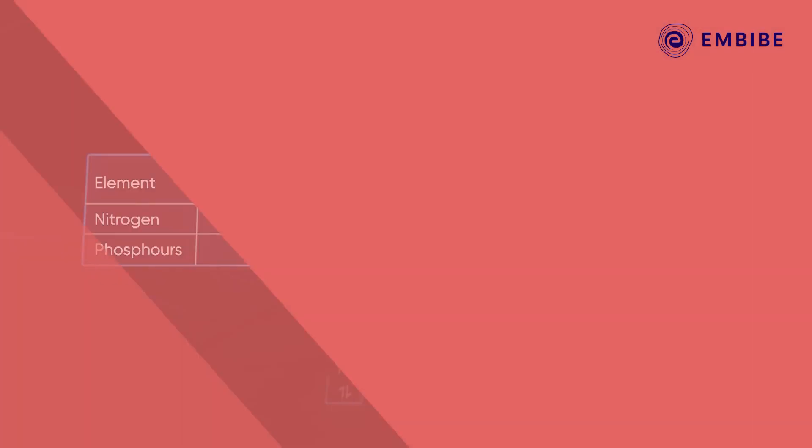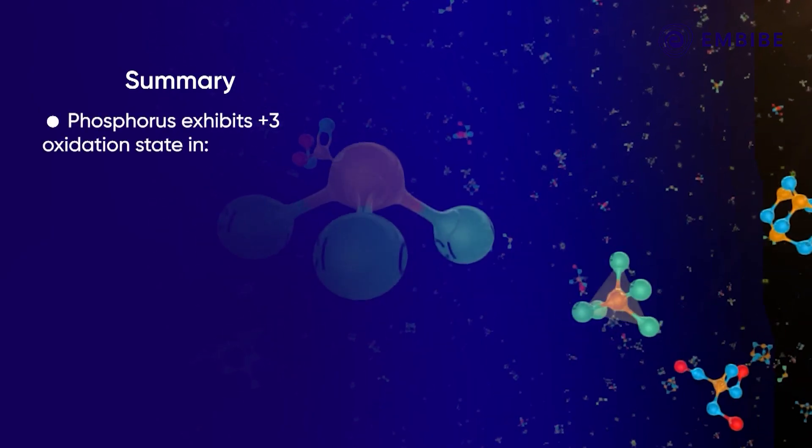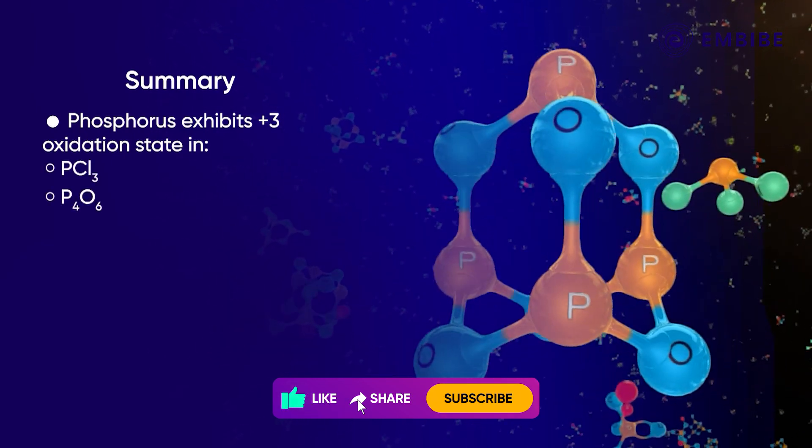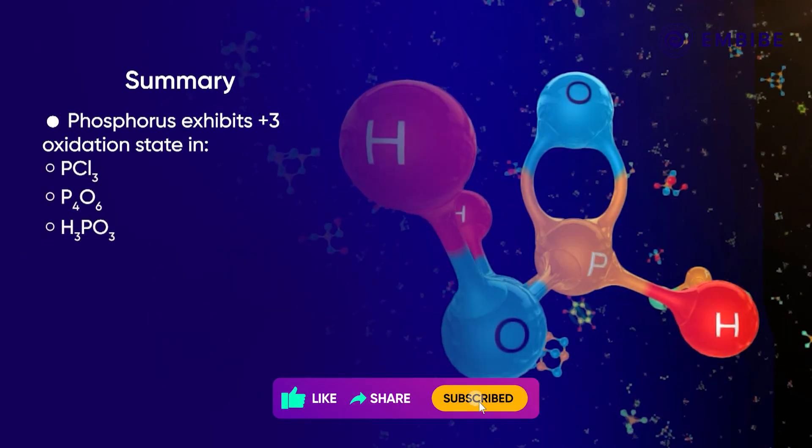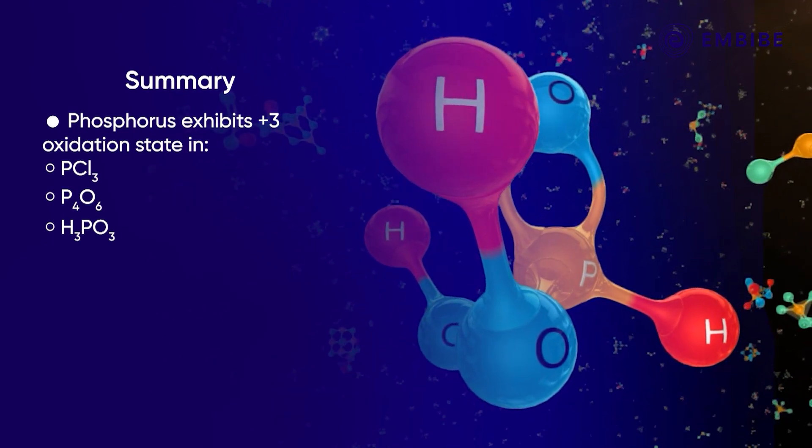To summarize, we have studied the various compounds of phosphorus like PCl3, P4O6, and H3PO3, where it exhibits the +3 oxidation state.